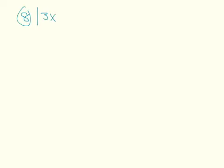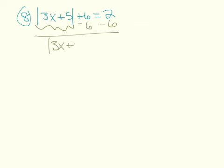We have two more problems. This one looks really horrible, but as long as you don't mess up the order, you'll find something nice. Your goal is to get the absolute value bars by itself. Start by subtracting six — that gives the absolute value of three x plus five equals negative four. If you look back, an absolute value equal to a negative is always no solution. So you stop here, write no solution, and move on.